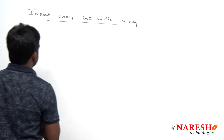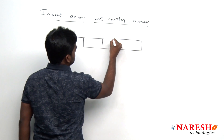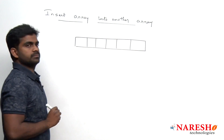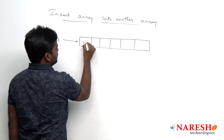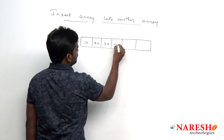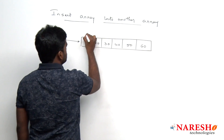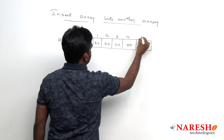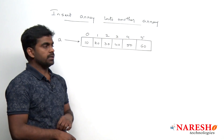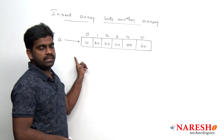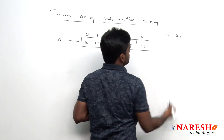First we are taking one array of any size, for example size 6. Array 'a' is pointing to this array and the elements are 10, 20, 30, 40, 50, 60 with index starting from 0 to 5. The size of this first array is stored in variable m, so m is equal to 6.